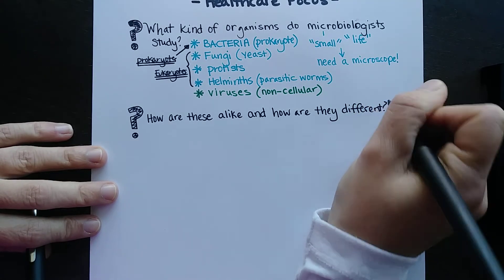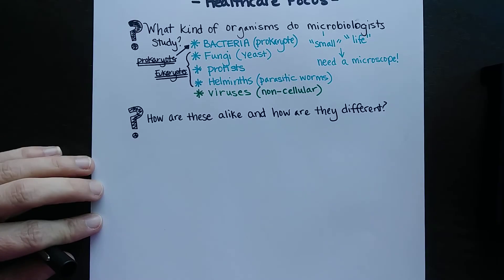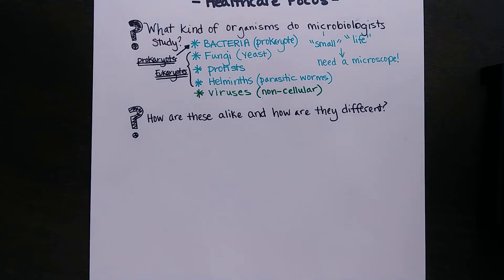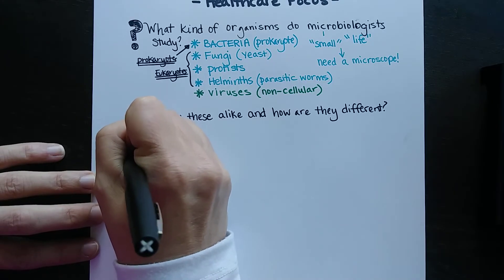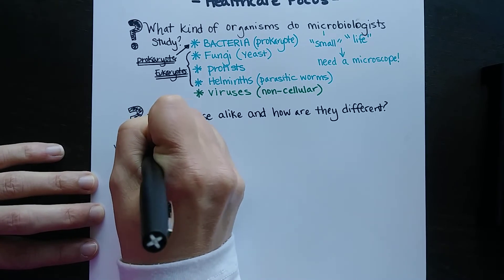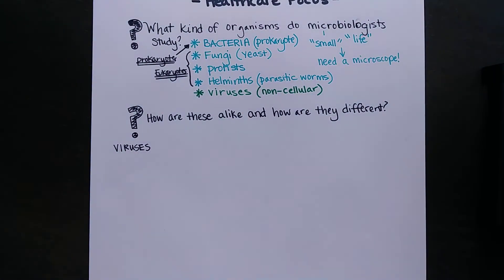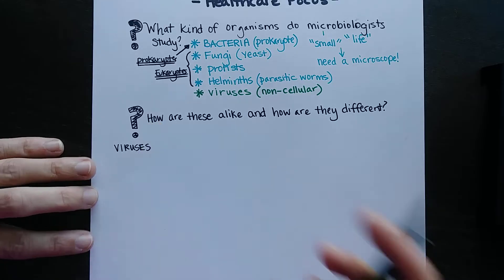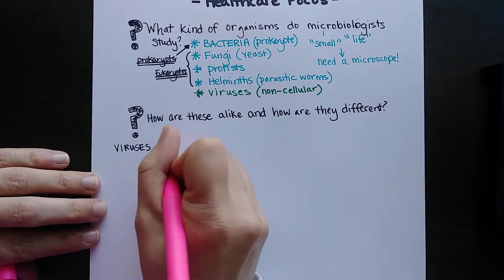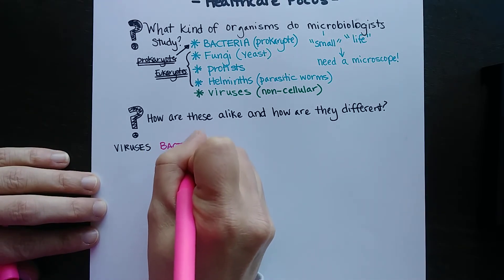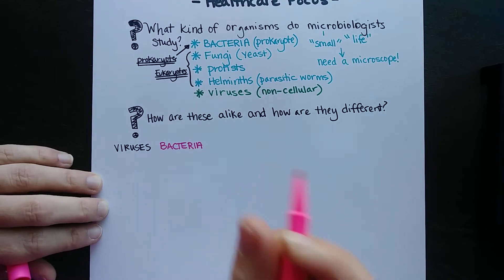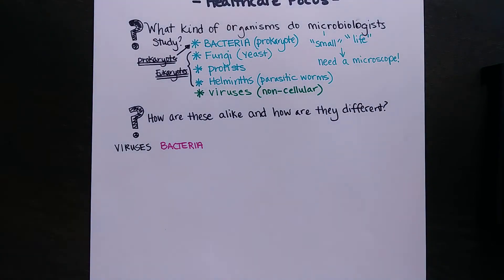For example, what is the difference between getting a fungal infection and getting a bacterial infection? Let's put these into some big groups. Starting with viruses, then bacteria, then protists — each listed in a different color.